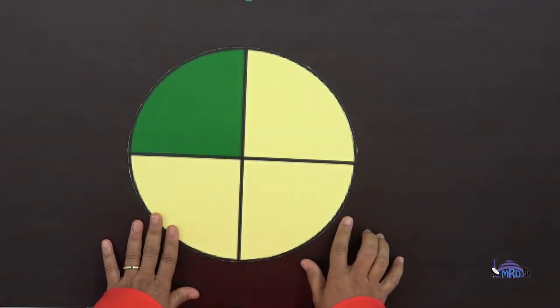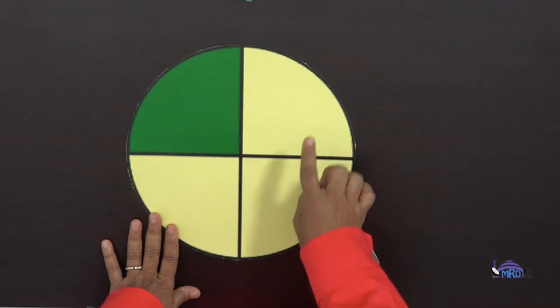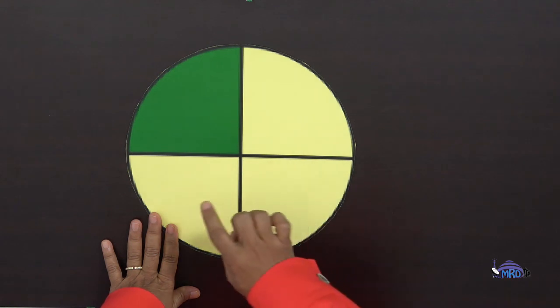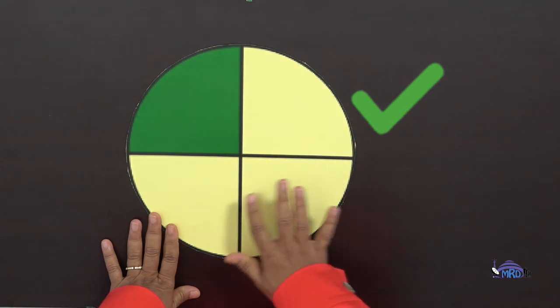Let's look at this one — another circle. Does this show fourths or quarters? One, two, three, four. Yes! These four parts are equal, so this shows fourths or quarters. Did you get that one?